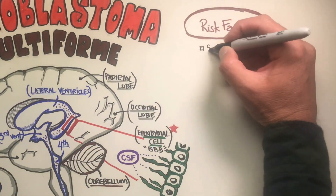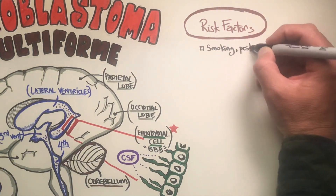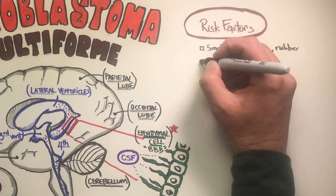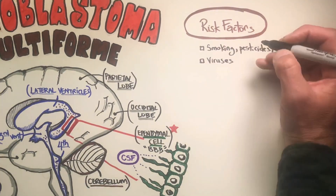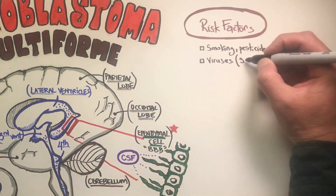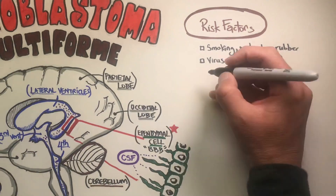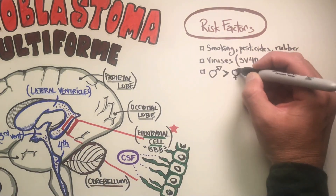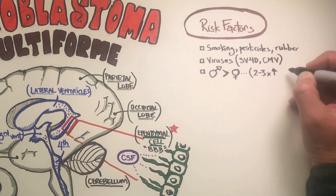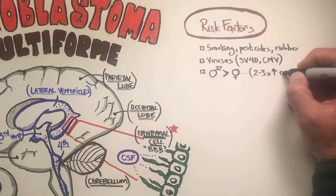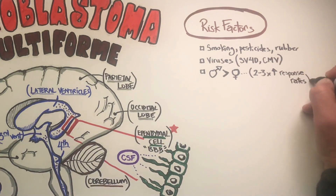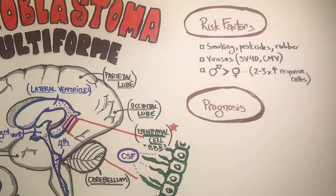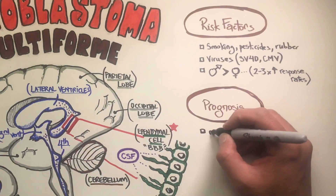Looking at risk factors associated with glioblastoma multiforme, we see lifelong exposure to smoking, pesticides, and rubber and textile industries. There are viruses associated as well, such as cytomegalovirus. We do see an increased incidence in men over women, and women actually get a better response rate from treatment as well.